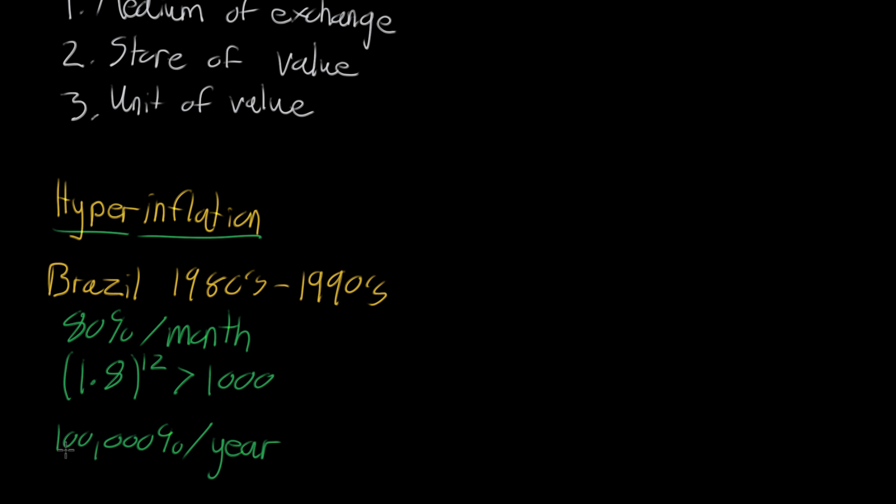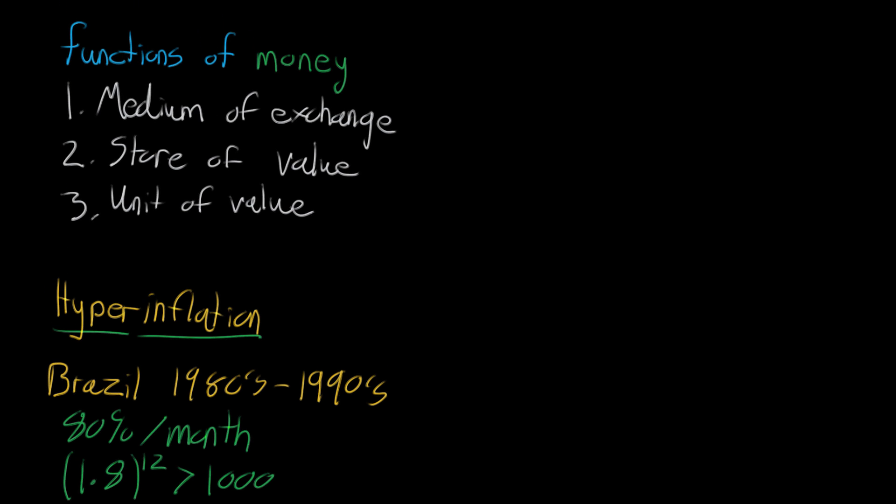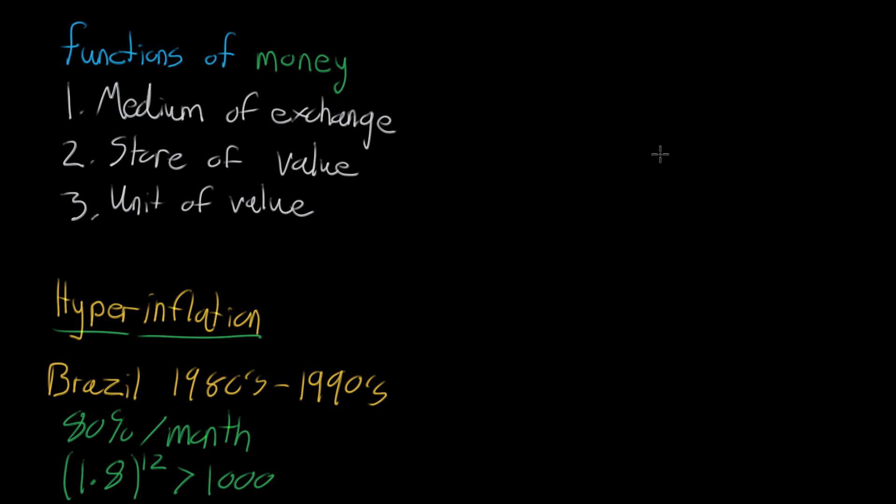Now, there have been inflation rates in history faster than this, but this is still really insane. And just to get our minds around what it might feel like to be in an economy like this, let's just imagine a super simplified economy where you have only four different people. So we'll have four different people here, and let's say, let's name these guys like person A, person B, person C, and person D.